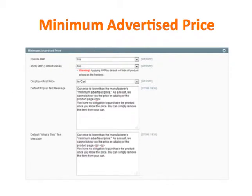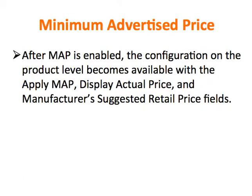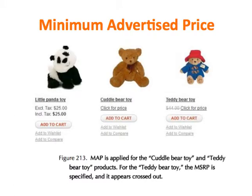Let's continue and talk about how to configure each one of those fields. After MAP is enabled, the configuration on the product level becomes available with the Apply Map, Display Actual Price, and Manufacturer's Suggested Retail Price fields. Here's a picture of the front end — MAP is applied for the Cuddle Bear toy and the Teddy Bear toy.